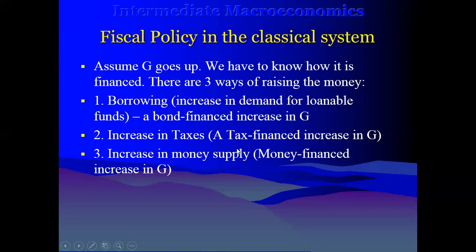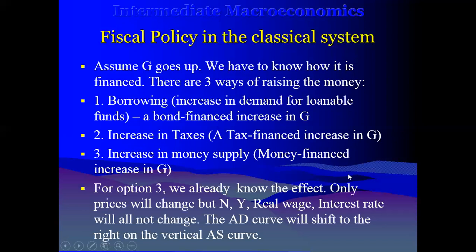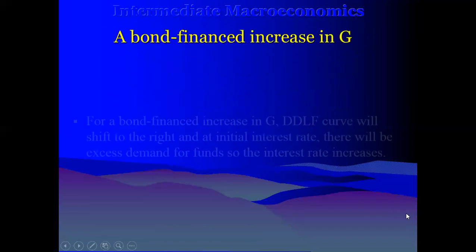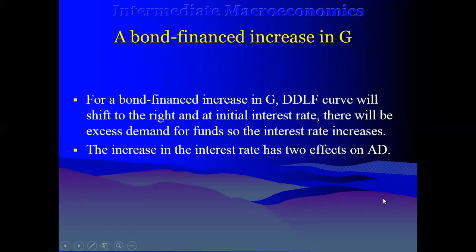If you want to finance the government deficit by printing more money, we are embarking on an expansionary monetary policy, and we just saw the effect — it will have no effect on output. So we know the money-financed case and the bond-financed case. Now let's look at when the deficit is financed through taxation — an increase in tax.